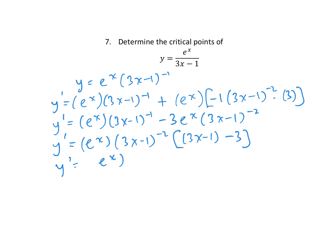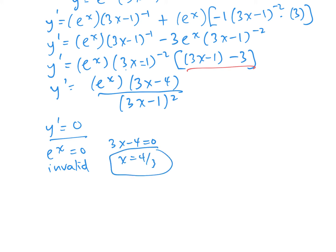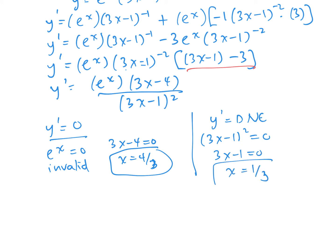Putting (3x minus 1) to the negative 2 in the denominator, the bracket simplifies to (3x minus 4). To find critical numbers we set y prime equals 0. The numerator gives: e to the x equals 0 (invalid) or 3x minus 4 equals 0, so x equals 4/3. For where y prime does not exist, the denominator gives (3x minus 1)² equals 0, so x equals 1/3 — which is a vertical asymptote. Critical numbers are x = 4/3 and x = 1/3.